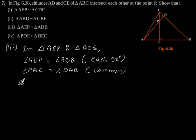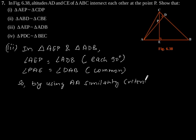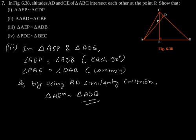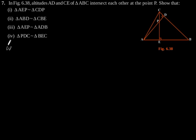So by using AA similarity criteria, we can say triangle AEP is similar to triangle ADB. Hence proved. Now the fourth part: show that triangle PDC is similar to triangle BEC.